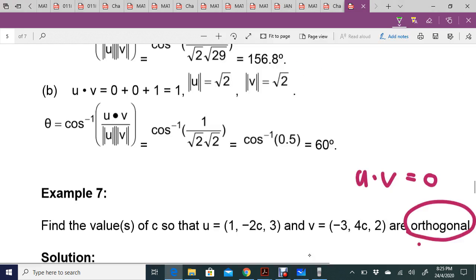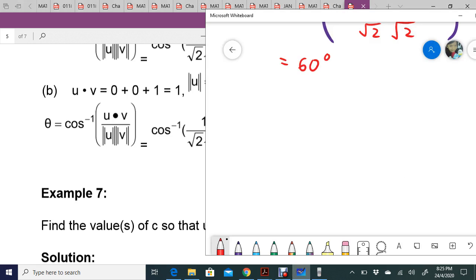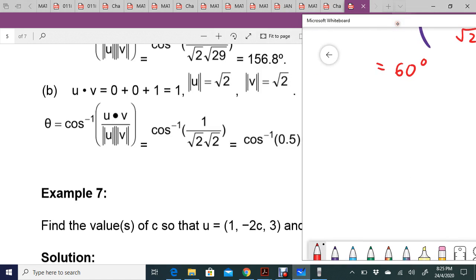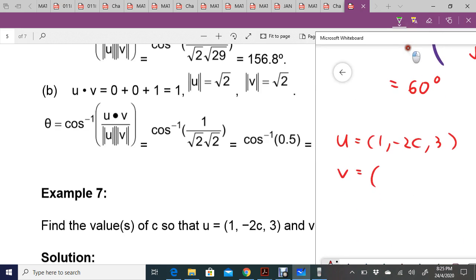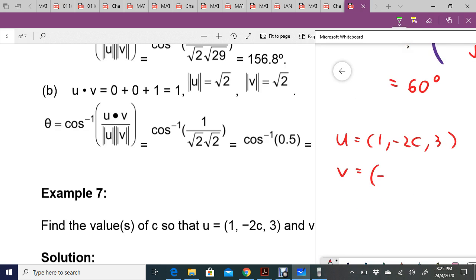Example 7: your u is (1, -2c, 3), and your v is (-3, 4c, 2).